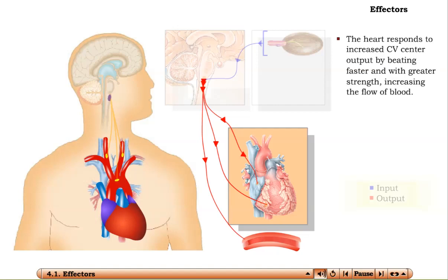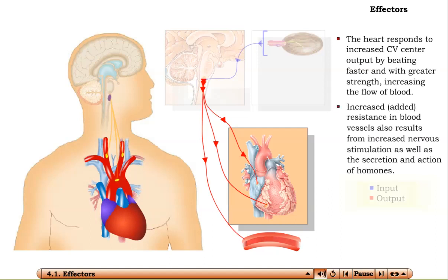The heart starts to beat faster, sending blood to the arteries at a faster rate. It also beats with greater strength, sending greater amounts of blood to the arteries with each beat. The nervous signals from the brain also trigger secretion of hormones that constrict blood vessels, increasing their resistance.